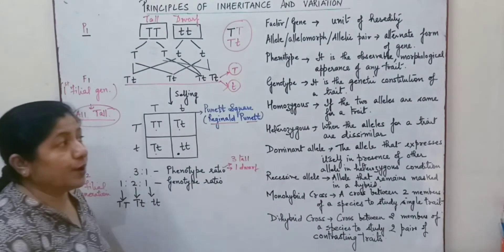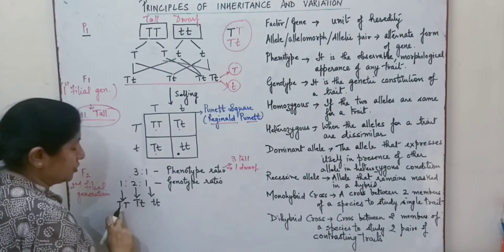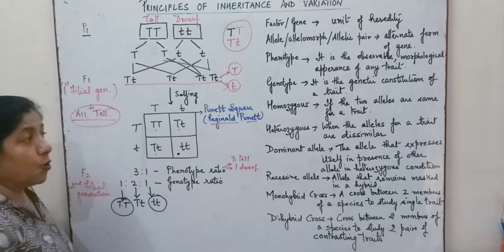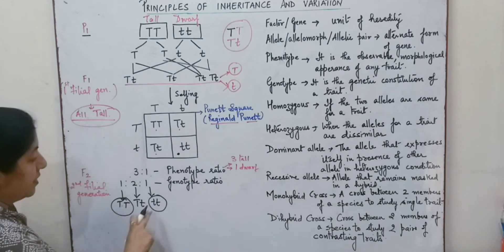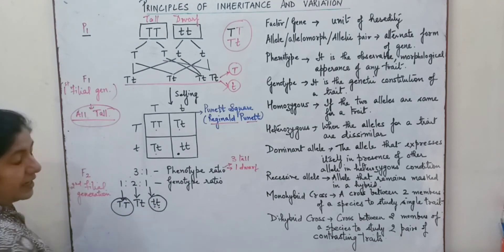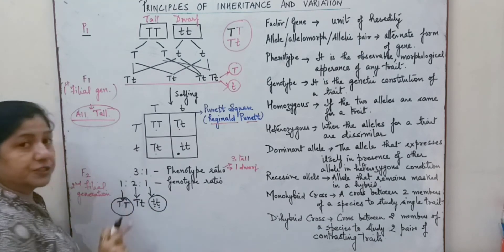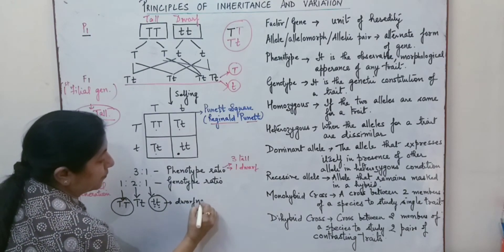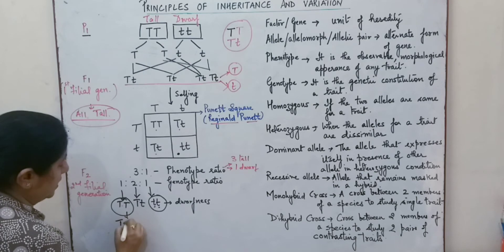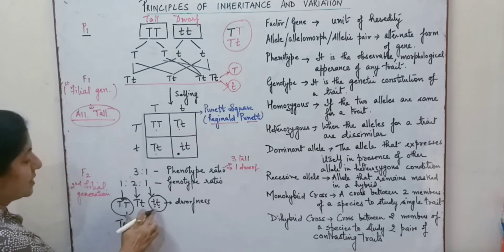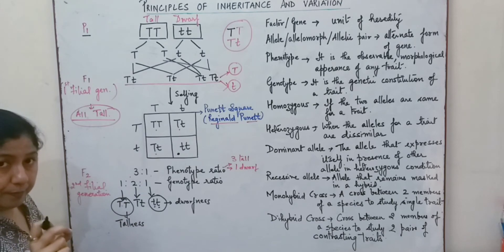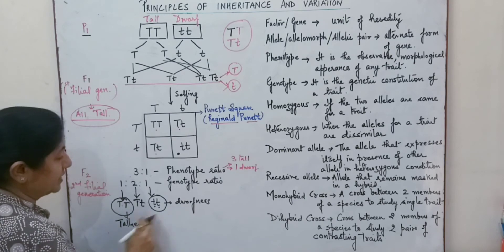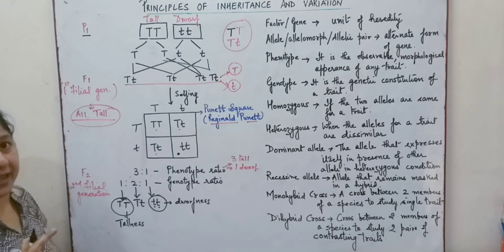Homozygous means the two alleles are the same for a trait. Looking at the Punnett square, the homozygous conditions are where both members of an allelic pair are similar — here it is for dwarfness and here it is for tallness. When both members of the allelic pair are similar, that is a homozygous allelic pair.